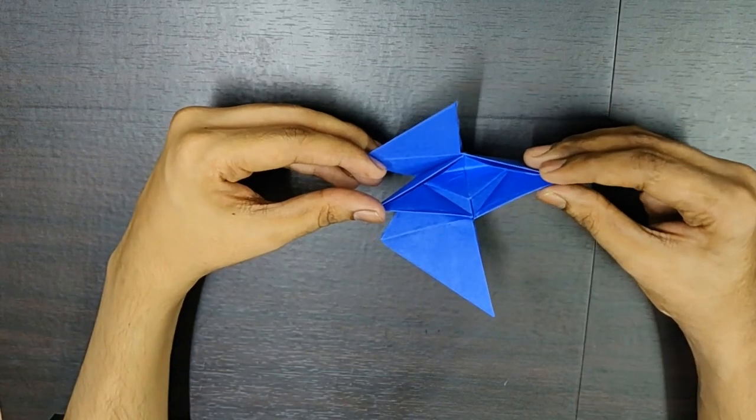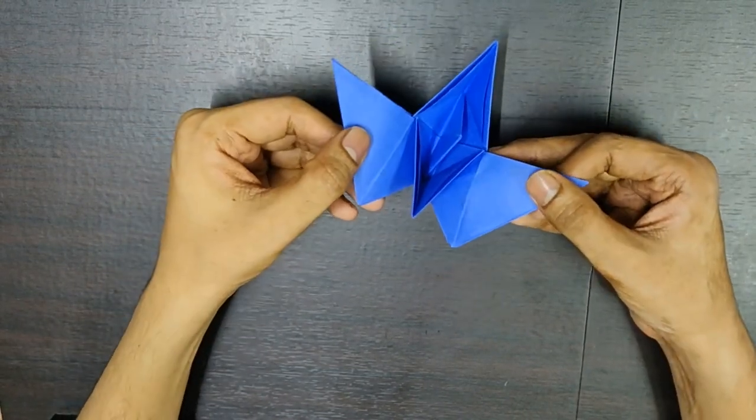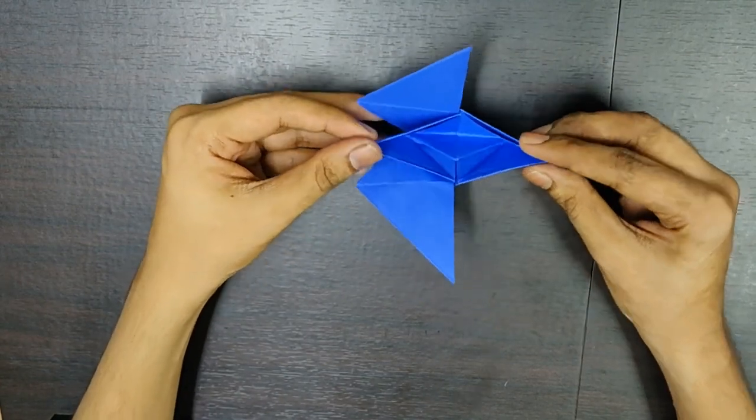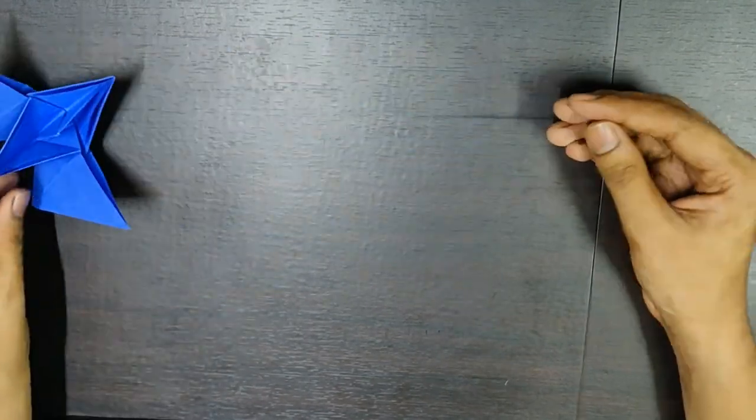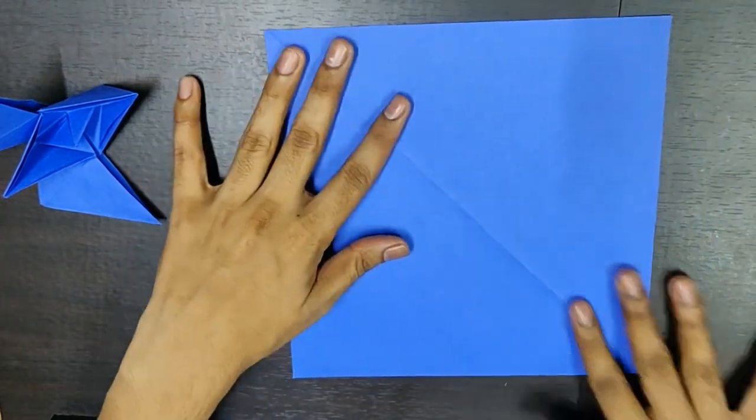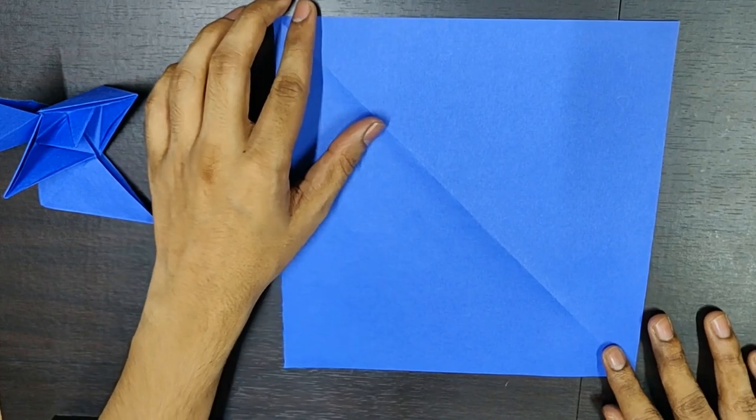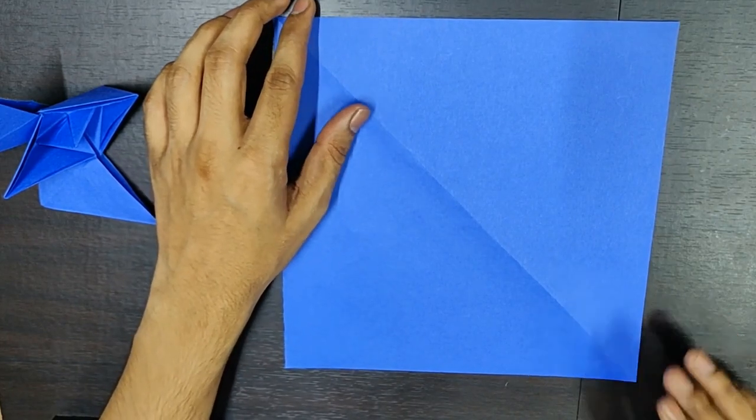So guys, this is the final aeroplane boat. This is how it looks. It's a boat with two wings. So, let's keep this aside and let's get started. For this, all you need is a square piece of paper. It can be of any size, it can be of any material. The one which I am using is origami paper.